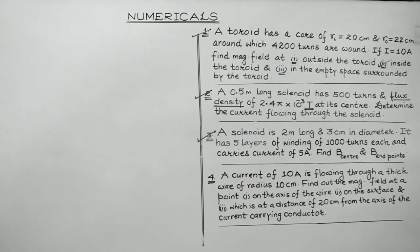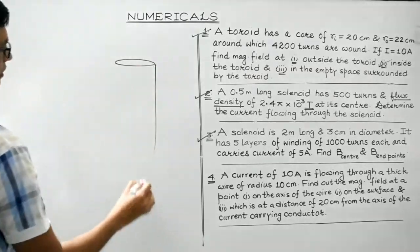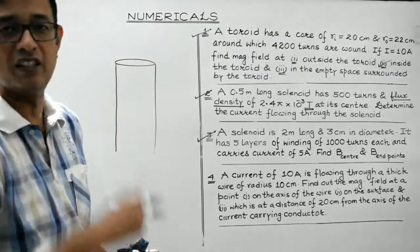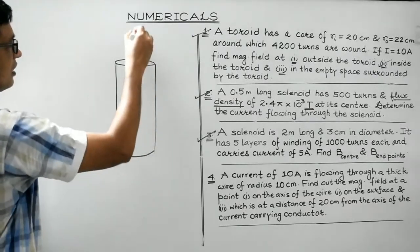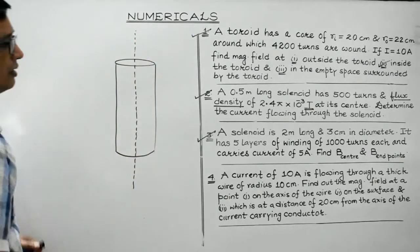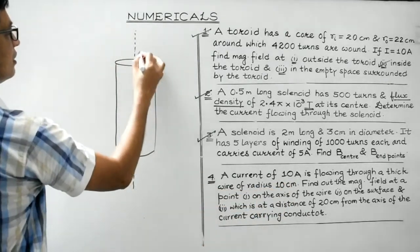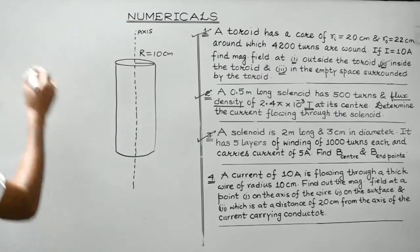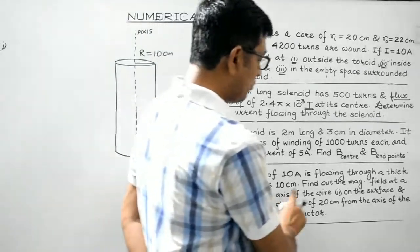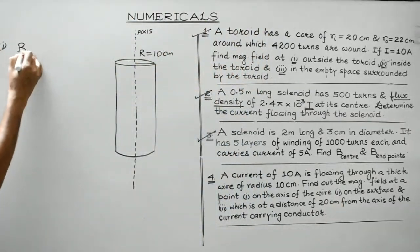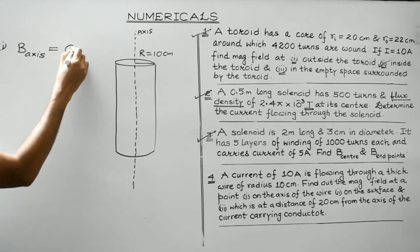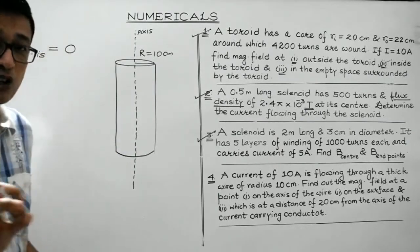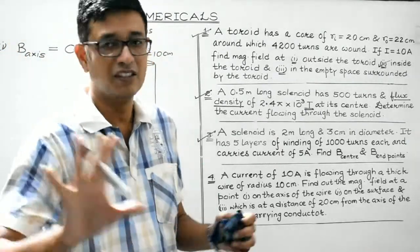This is a thick conductor. The DC current flows throughout the body of the conductor. The radius is given as capital R = 10 cm. For the first part — the magnetic field at a point on the axis — we know that the magnetic field at any point on the axis of a current-carrying conductor is always zero. This has been mathematically proved, so at any point on the axis, B = 0.